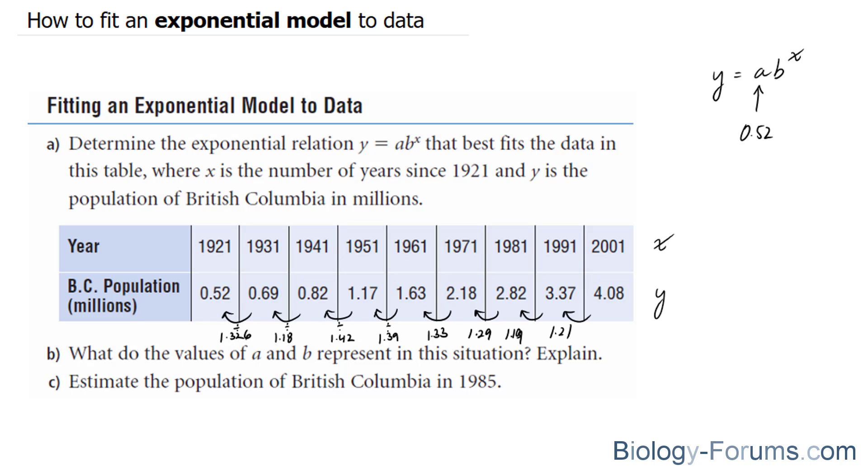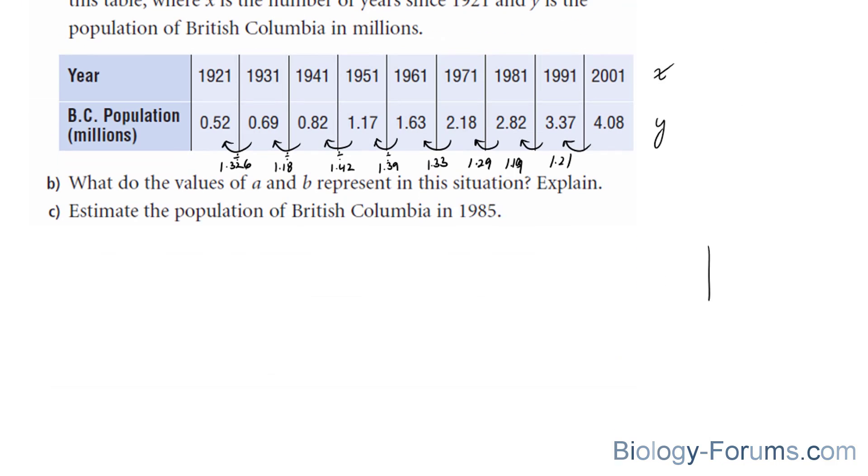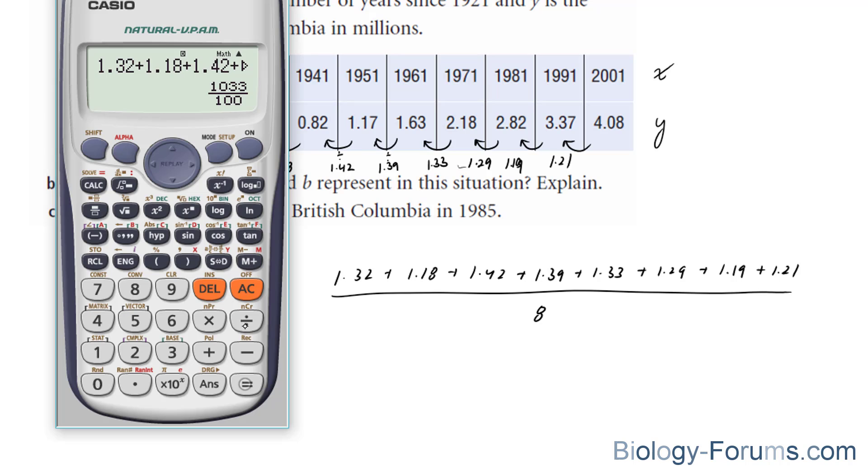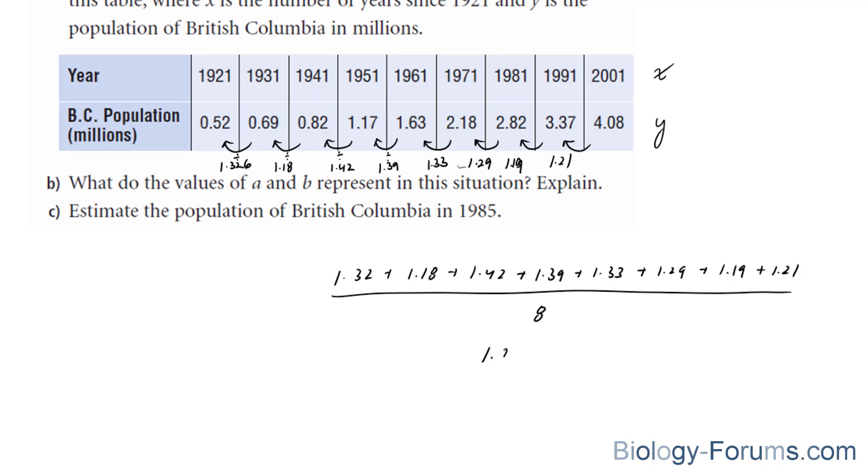Now that we've found out all of these numbers, what we could do is find their average. So let's do that. Let's find their averages by adding them all up and dividing by the number of observations: 1, 2, 3, 4, 5, 6, 7, 8. 1.32 plus 1.18... equals 1.29.